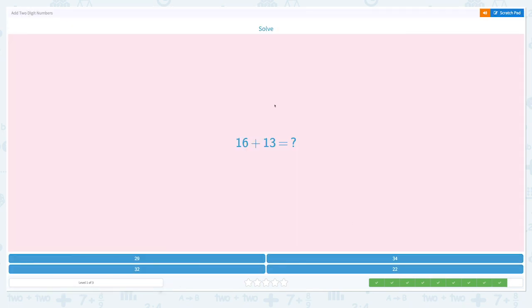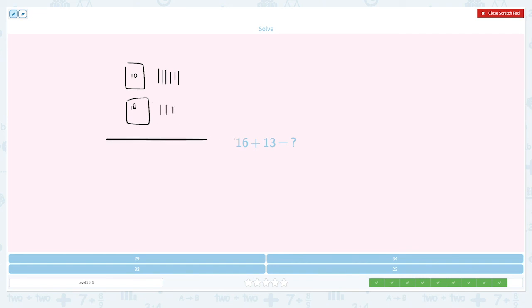You have 1 more question. Solve: 16 plus 13. Let's use base 10 blocks this time. 16 means I have 1 ten, 1, 2, 3, 4, 5, 6 ones. 13 means I have 1 ten and 3 ones: 1, 2, 3. Let me count all the ones.